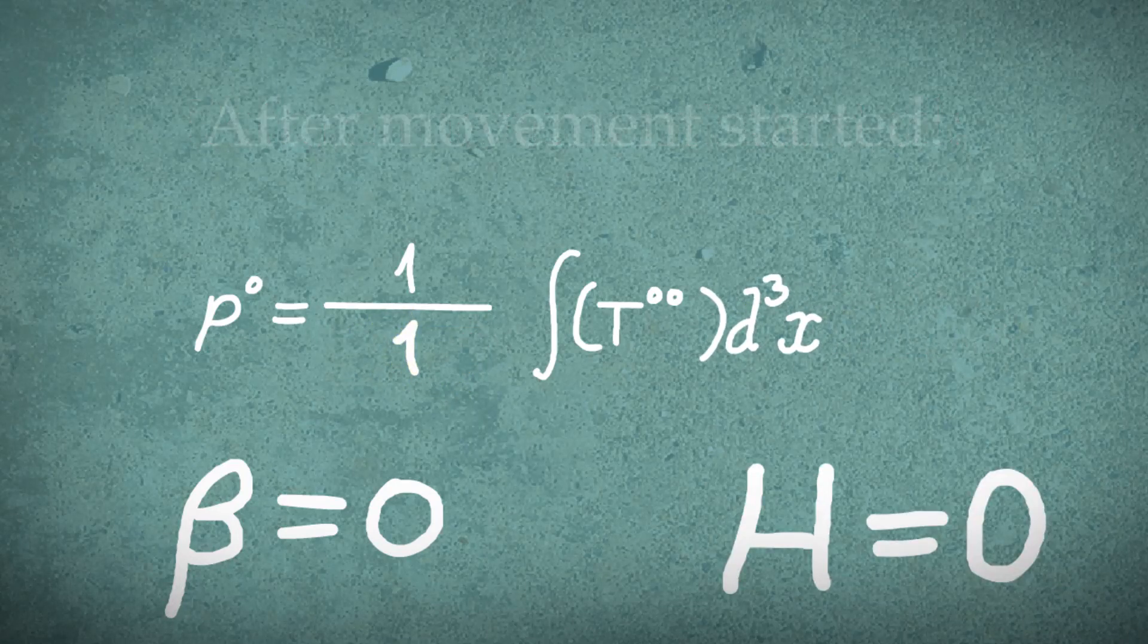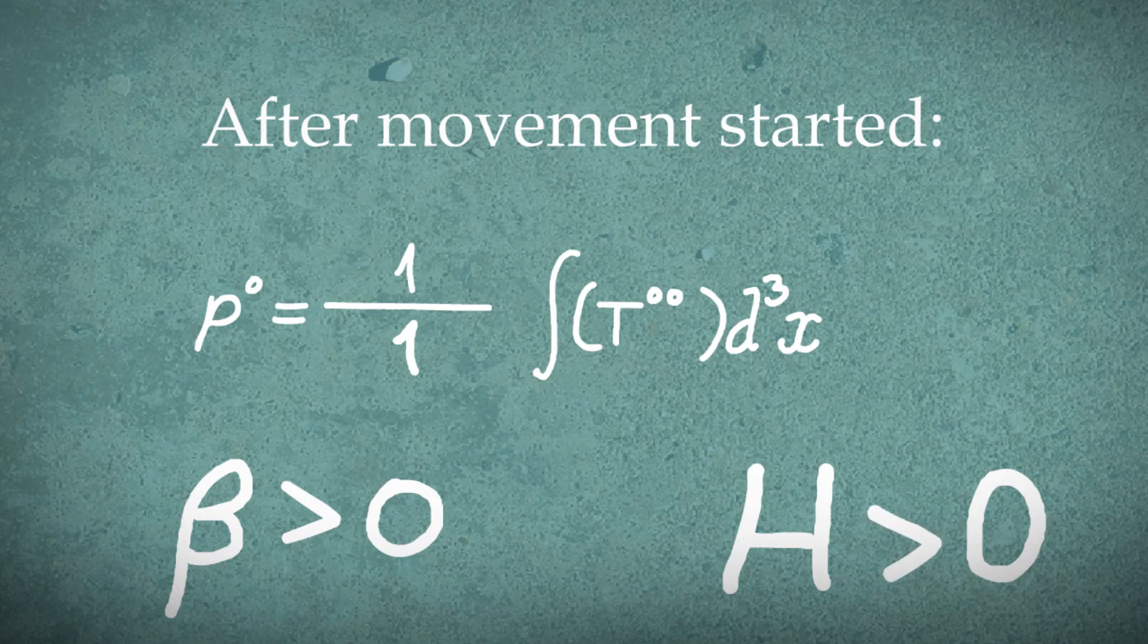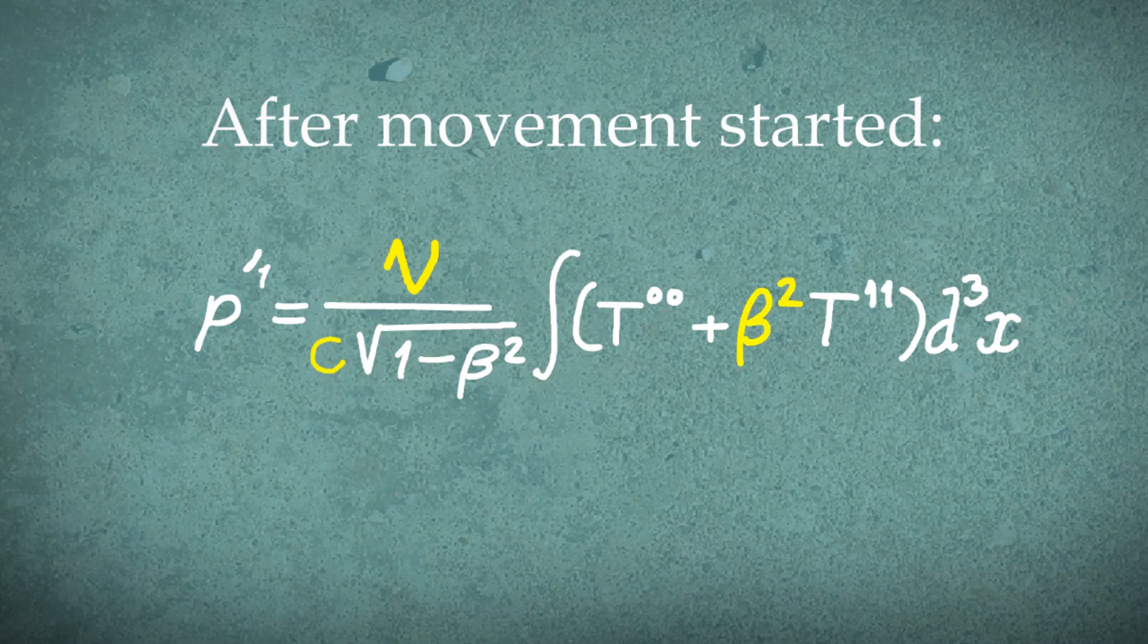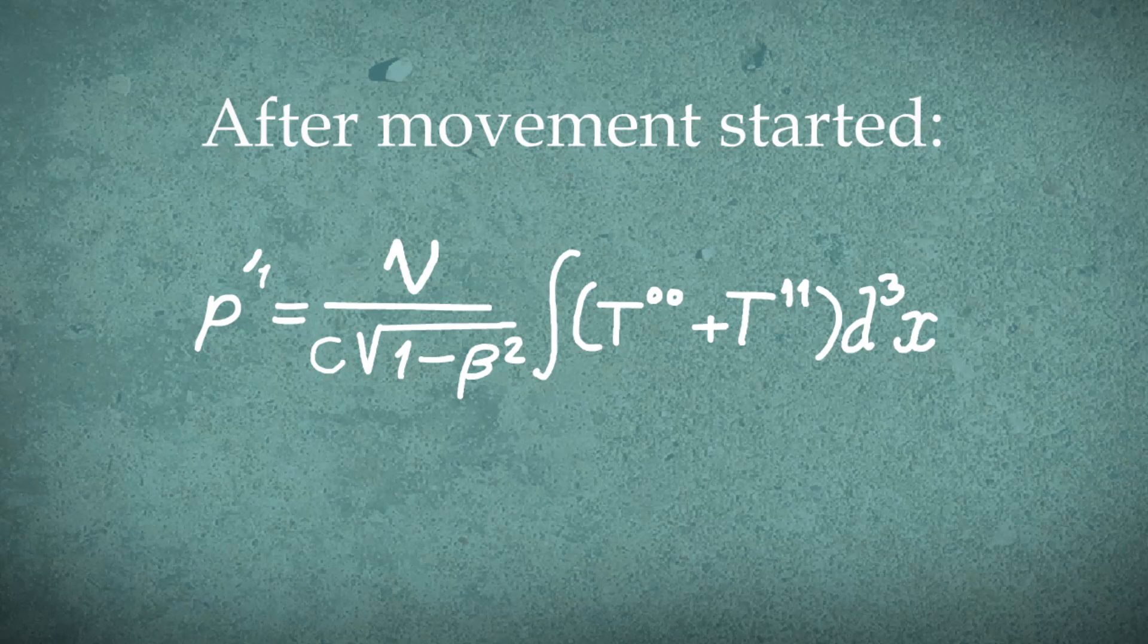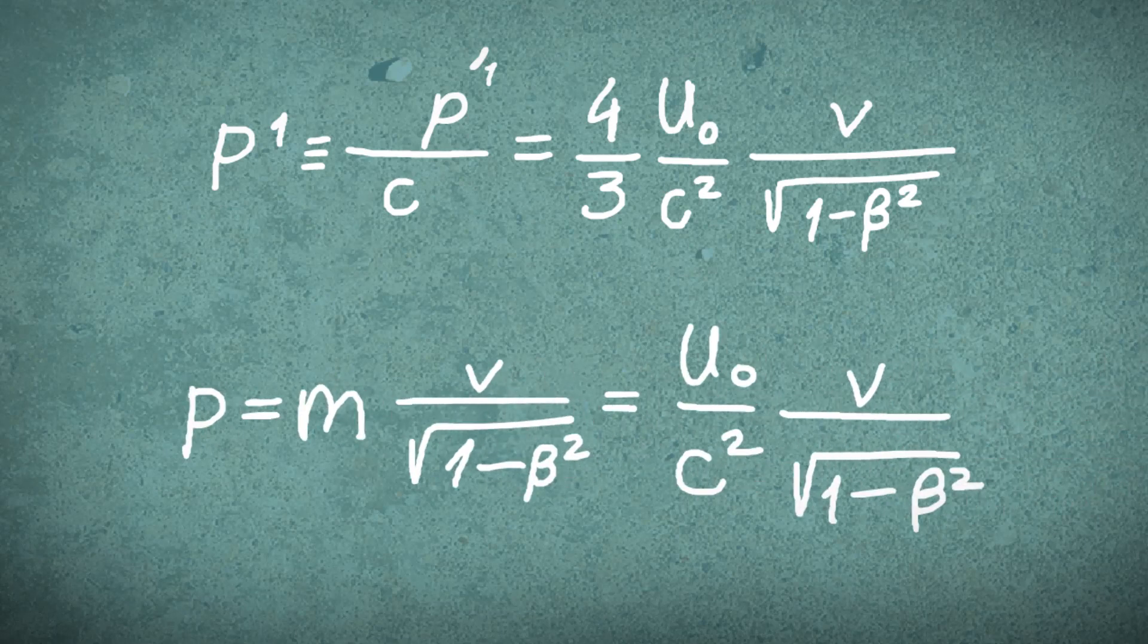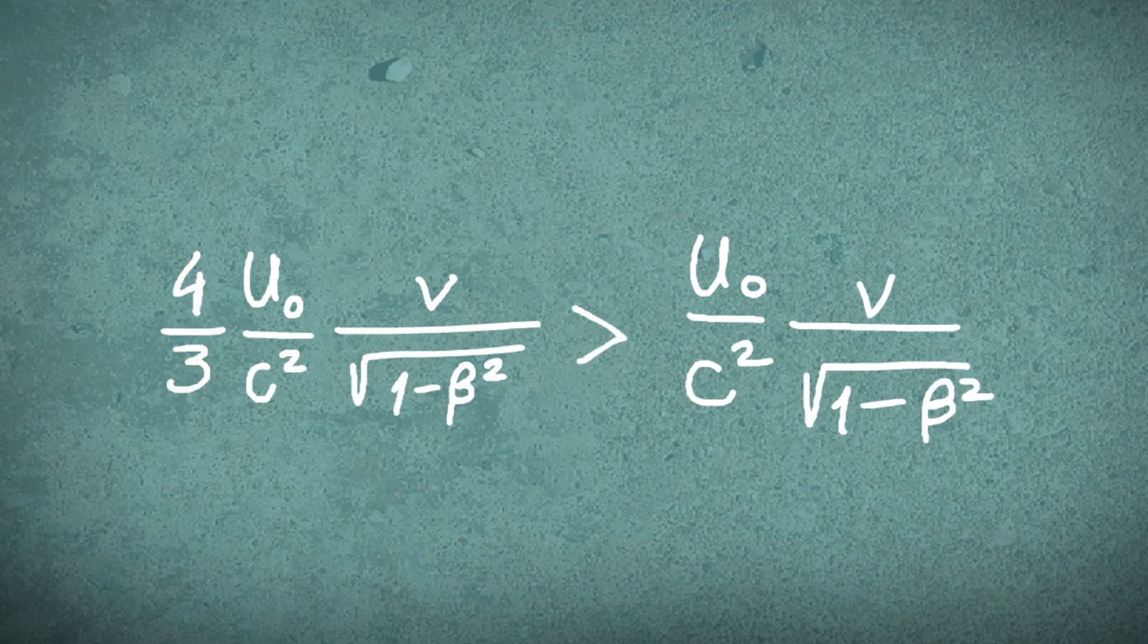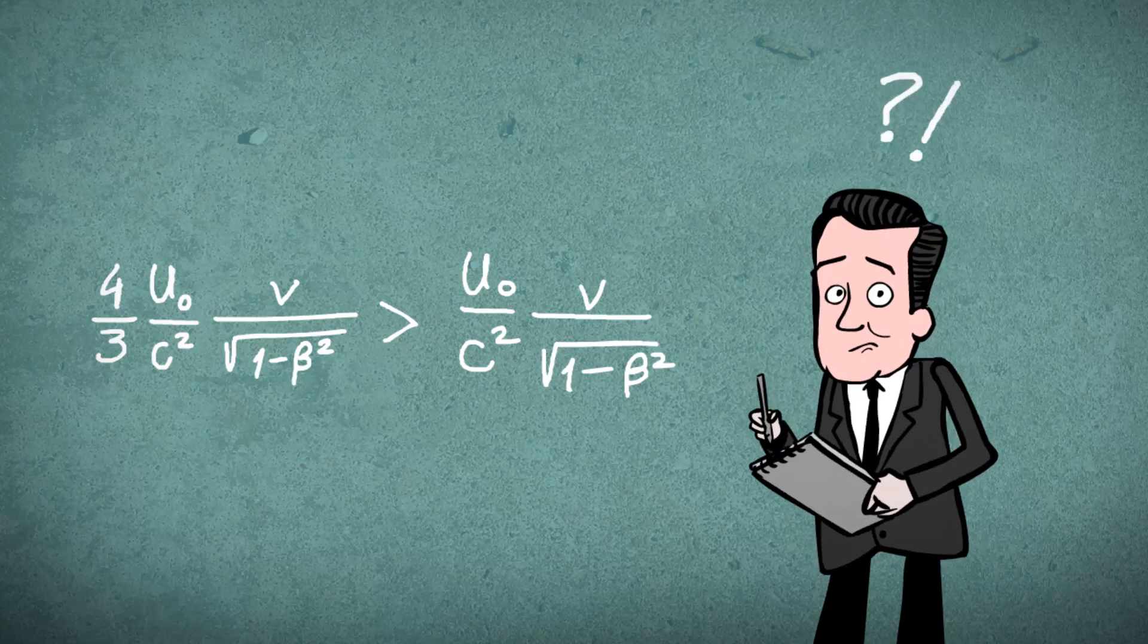But after movement starts, beta is no longer zero, therefore the magnetic field is greater than zero. When using the Lorentz transformation, there is an added term in the electromagnetic energy and momentum calculation. But according to Einstein, the momentum should be different. The particle's electromagnetic mass comes out greater by a third than the original stationary electromagnetic mass. Indeed strange.